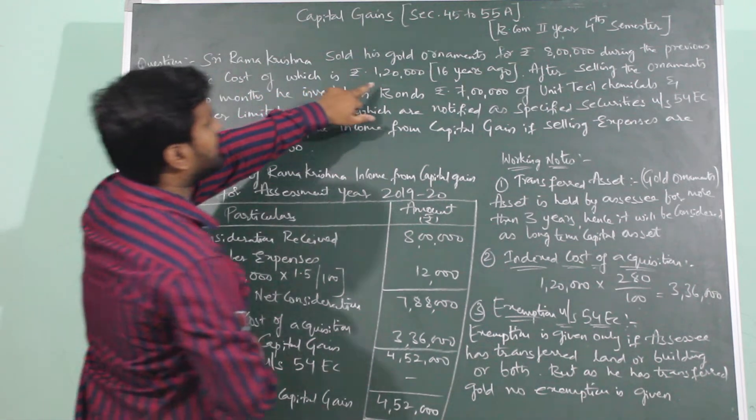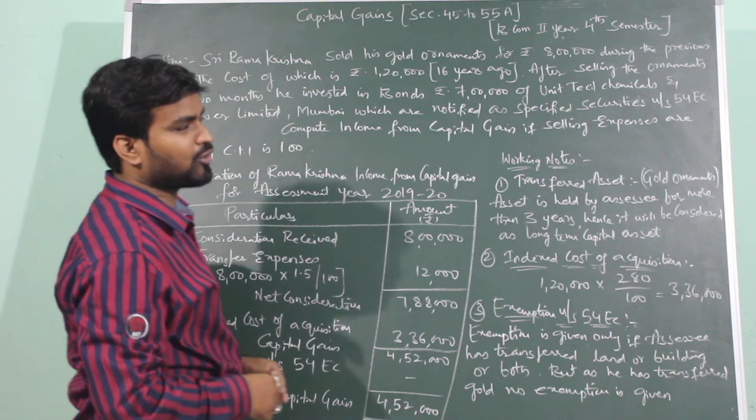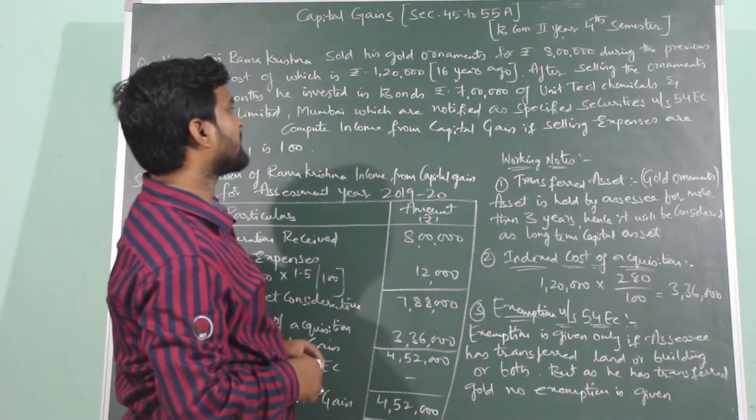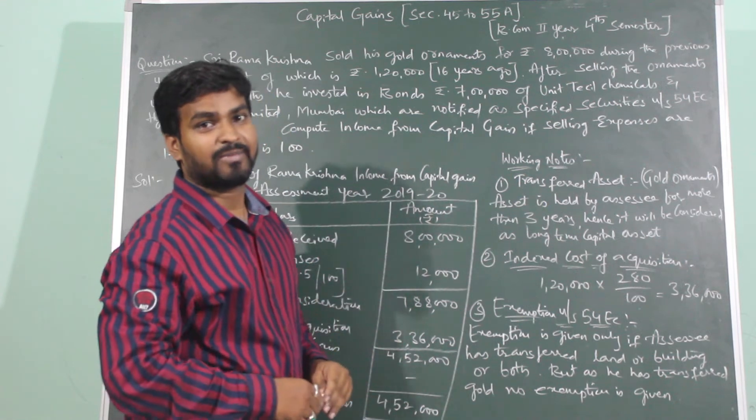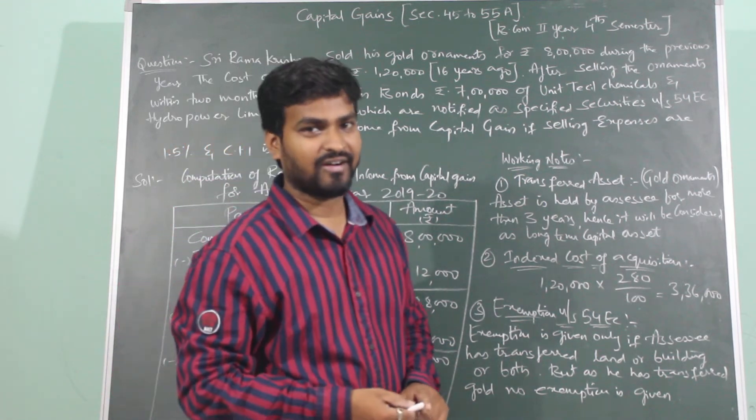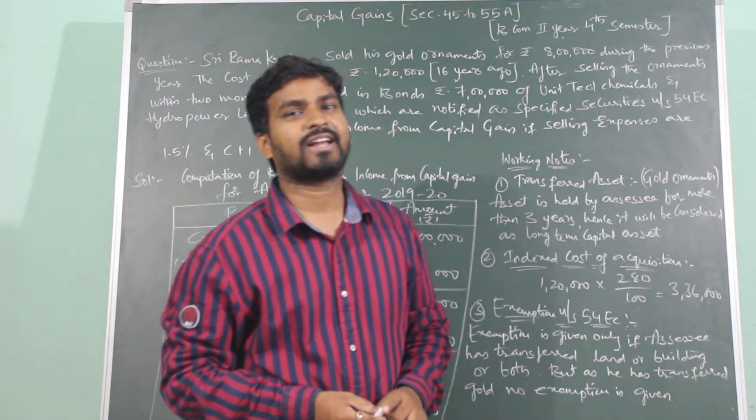The cost of which is 1 lakh 20,000, 16 years ago. Sona saal pehle ye gold ornaments ki keemat kya thi? Ek lakh 20,000 thi. So, samajh mein aaya, the asset is purchased before 2001, for which the index number will be taken as 100.